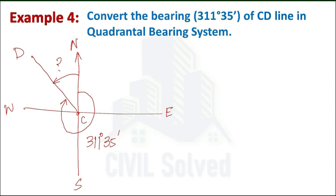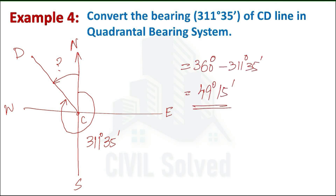In a complete circle the total angle is 360 degrees. Subtracting 311 degrees 35 minutes from 360 degrees gives the remaining angle. By calculation we get 49 degrees 15 minutes. Since we need to include the quadrant in the quadrantal bearing system, and the line is in the northwest quadrant, the final answer is N 49° 15' W. This concludes the four examples on conversion between bearing systems. Thank you.